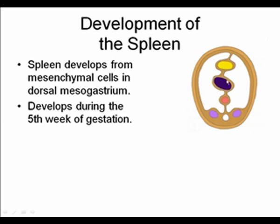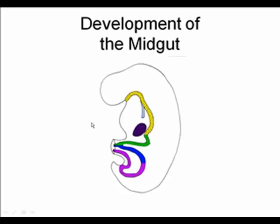The spleen develops in the dorsal mesentery, depicted here in yellow, at about the fifth week of gestation.